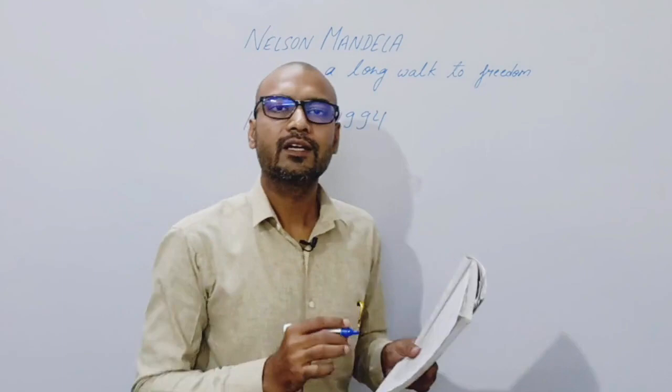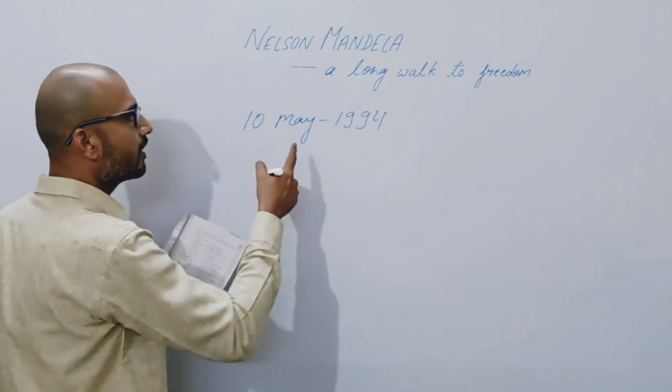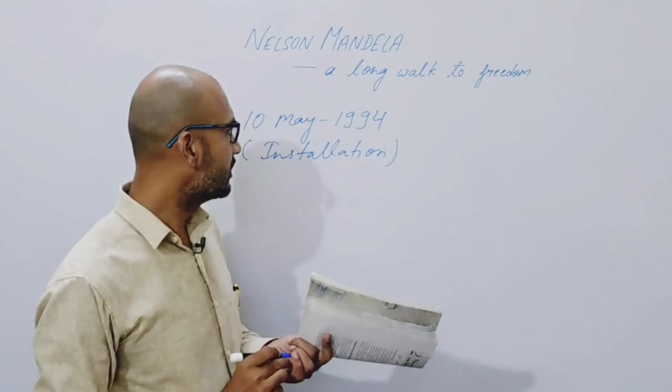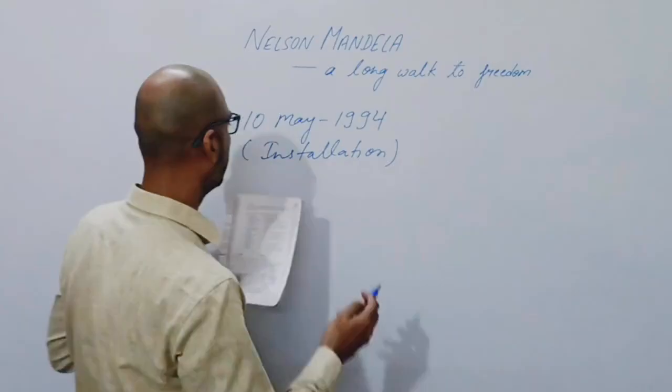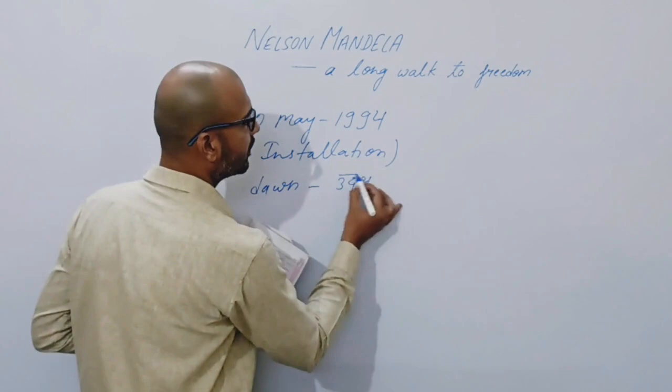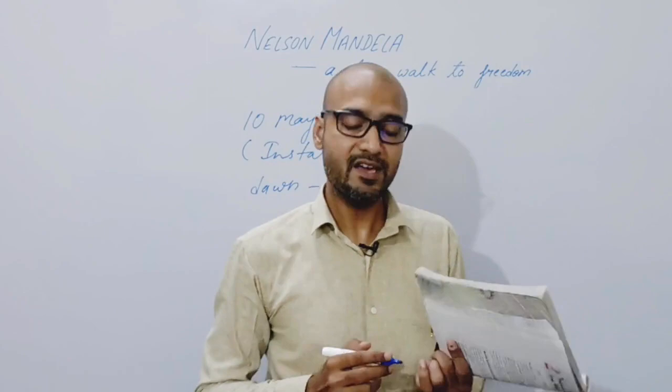Poori baat — apna poora concept likha. Yeh special kyun hai — 10th May 1994 ko unhone new government ka installation rakha. 10th May dawned bright and clear. Ab dawn ki spelling dekhenge — dawn ka matlab hota hai udaya, yaani new starting. Toh 10th May dawned bright and clear.